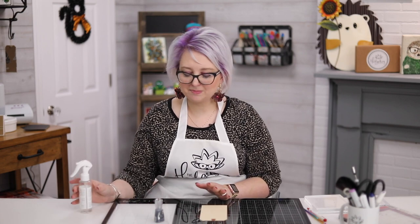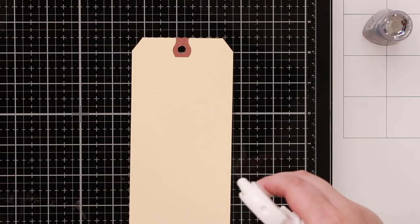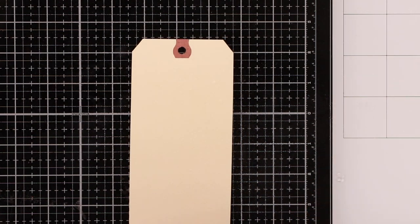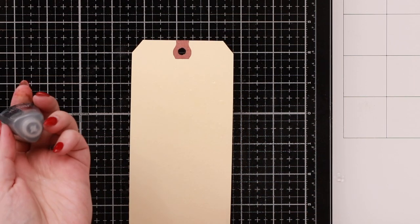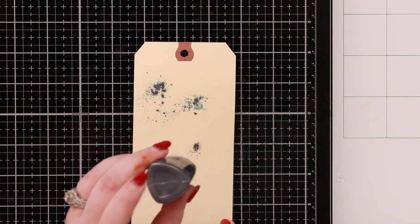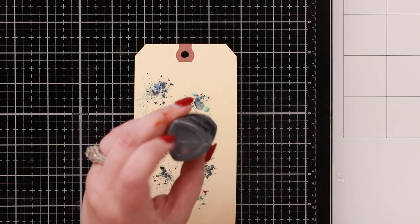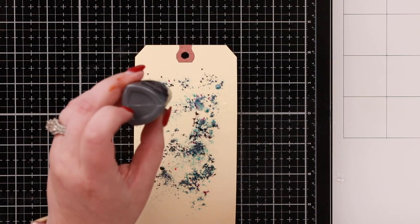I'm going to share with you a couple of different ways to use shimmer powders. I like to first of all spritz my cardstock. The reason I do that is the powder is attracted to where that water is and I find I get less mess. You also get kind of an instant reaction.